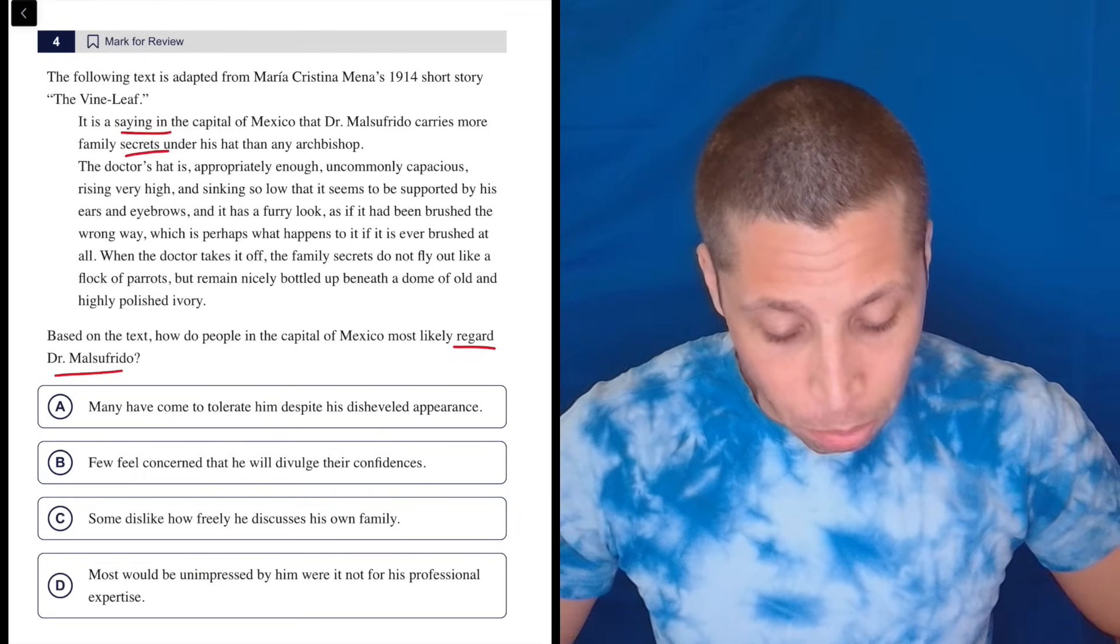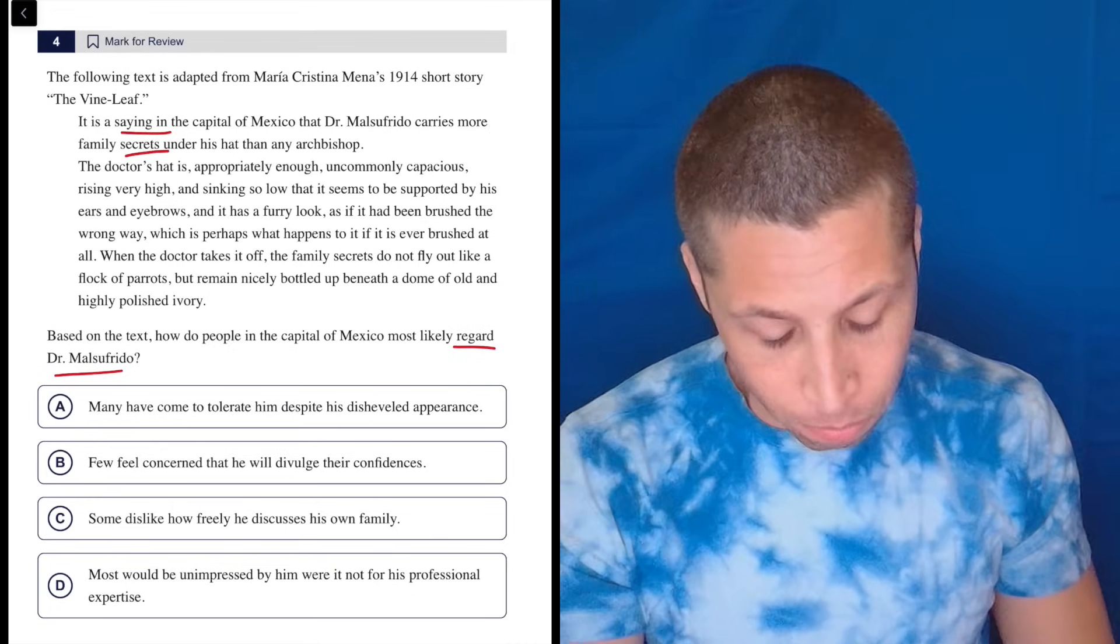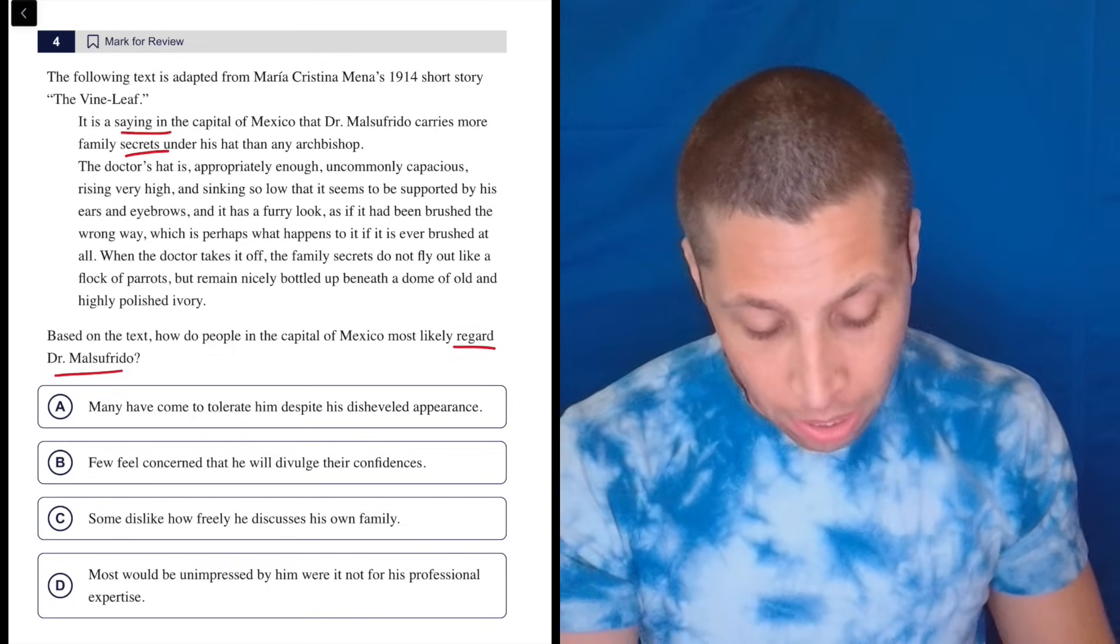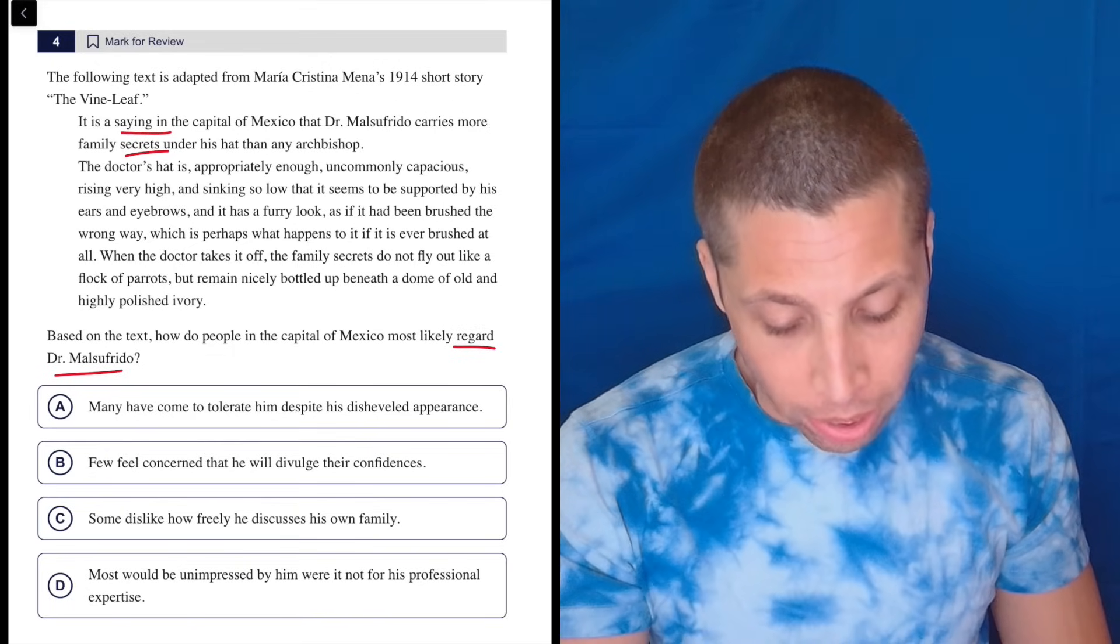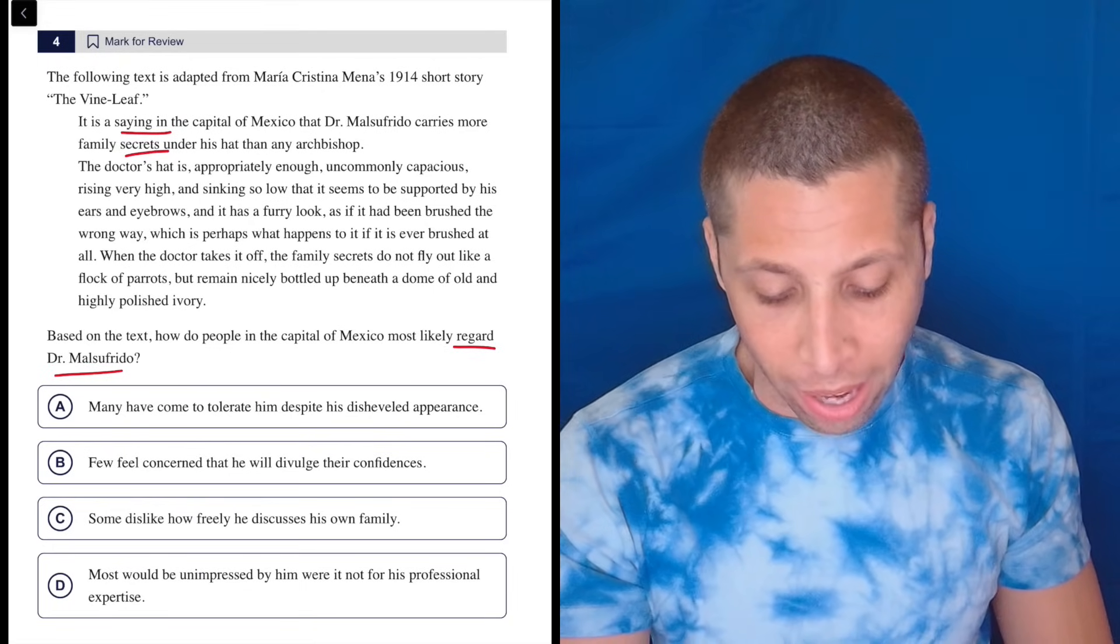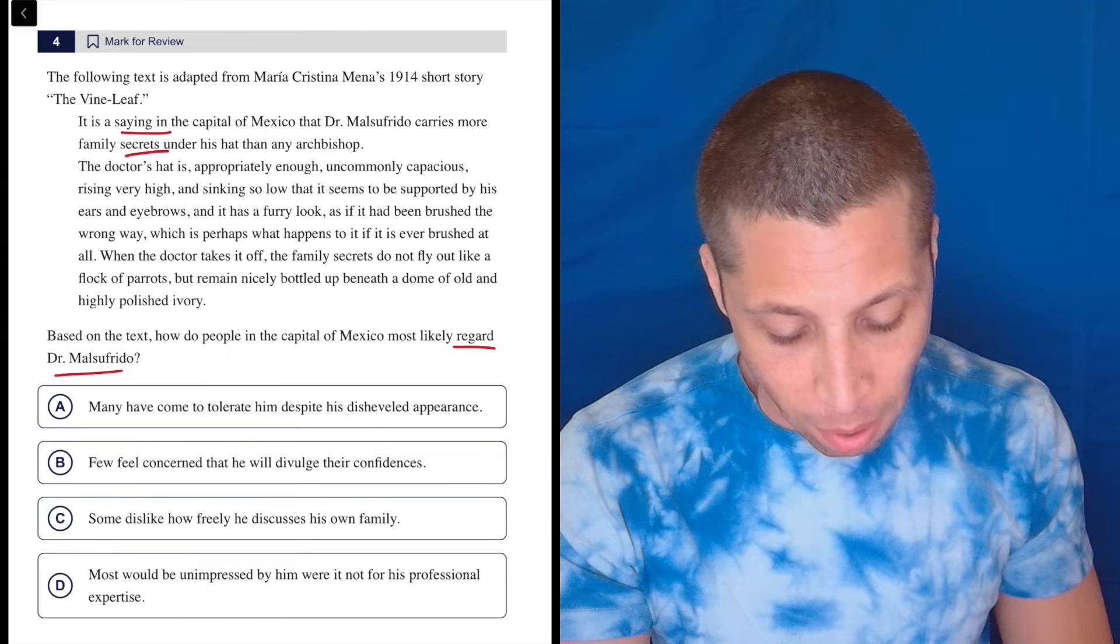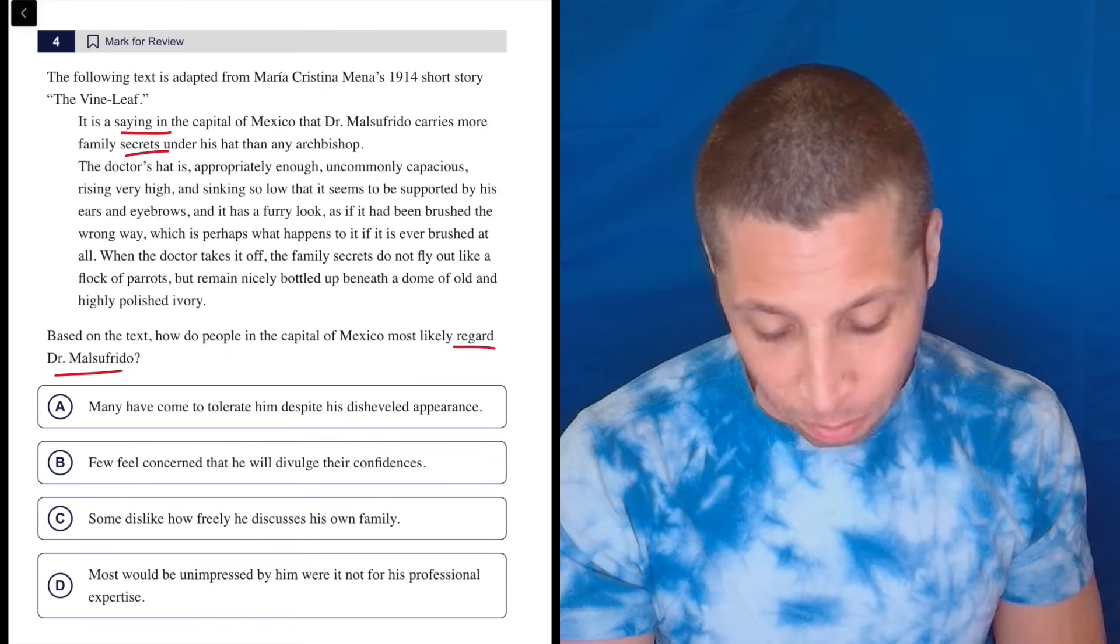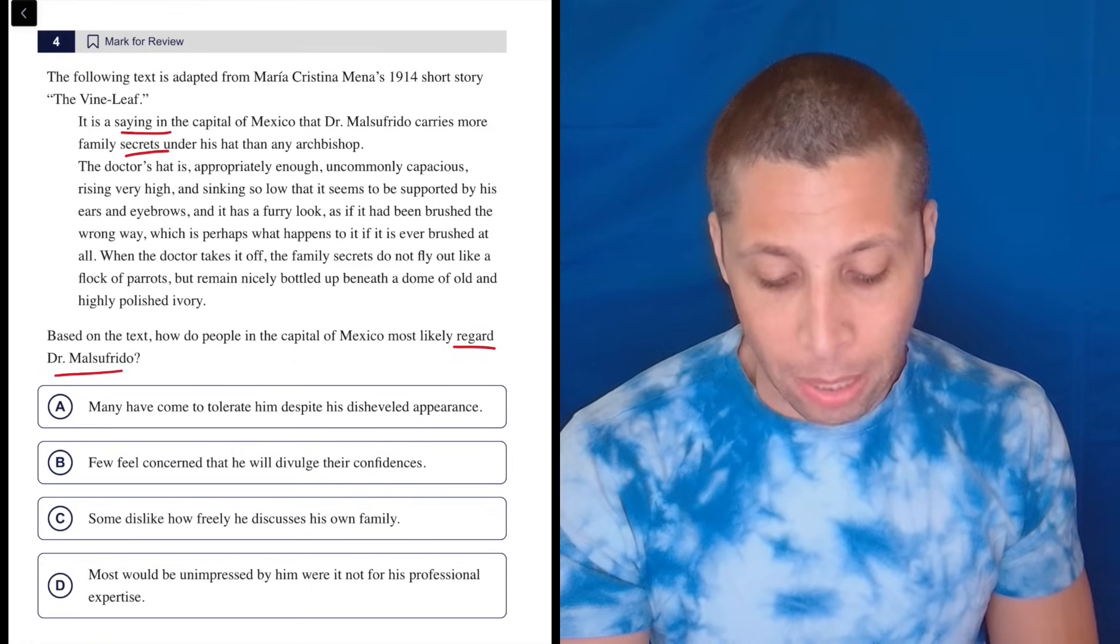The doctor's hat is appropriately enough, uncommonly capacious, meaning wide I guess, or big, rising very high and sinking so low that it seems to be supported by his ears and eyebrows and has a furry look as if it had been brushed the wrong way, which is perhaps what happens to it if it is ever brushed at all. When the doctor takes it off, the family secrets do not fly out like a flock of parrots, but remain nicely bottled up beneath a dome of old and highly polished ivory.